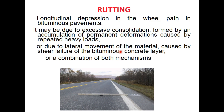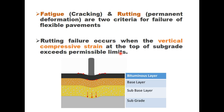There are two criteria of failure in flexible pavements: one is fatigue and another is rutting. While fatigue cracking occurs due to high tensile strain developed at the bottom of the bituminous layer, rutting failure occurs when the vertical compressive strain at the top of the subgrade exceeds permissible limits. These limits are determined using IITPAVE software.